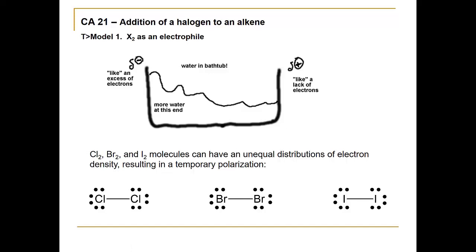We can assume there's a delta negative on one side and a delta positive on the other side of that diatomic chlorine molecule. This temporary polarization can then get reversed, so these halogens can indeed serve as electrophiles. Typically, we don't see these reactions with diatomic fluorine, because the other halogens are larger and therefore more easily polarizable — more easily for the electrons to slosh back and forth.